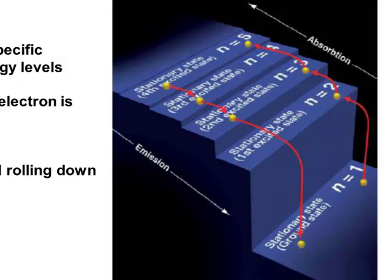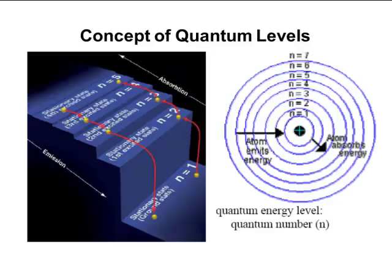When an electron drops to a lower energy level, that's going to be an emission process. Those absorption and emission processes involve energy transitions that we can relate based upon delta E being E_final minus E_initial — the energy state of our final minus the energy state of our initial. Wherever our electron started, that's the initial; wherever it ended, that's the final.